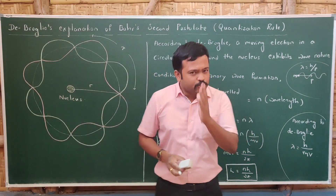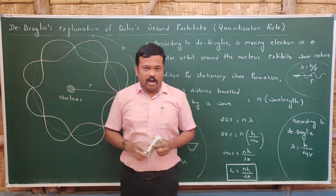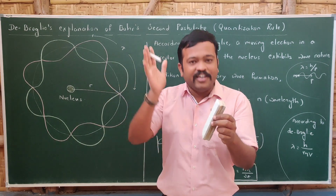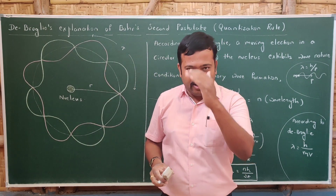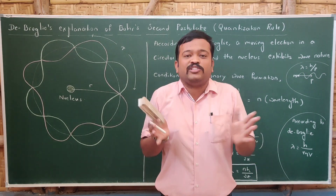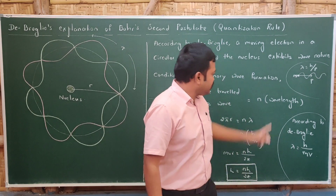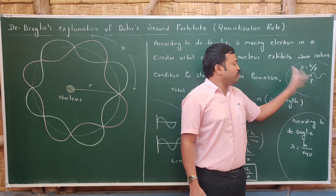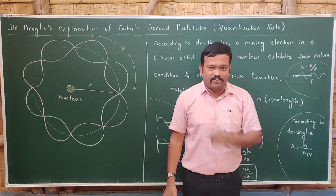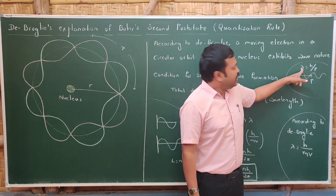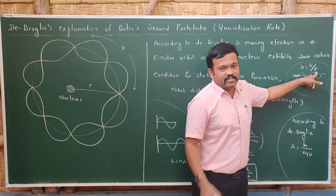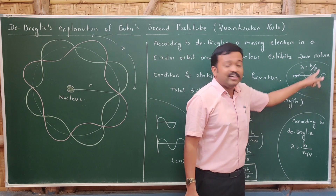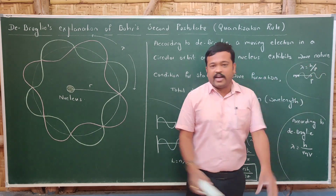Now let us see the explanation for Bohr's second postulate given by de Broglie. According to Bohr's second postulate, electrons revolve around the nucleus only in orbits where angular momentum is an integral multiple of h/2π. De Broglie's hypothesis states that a particle of mass m moving with momentum p is always associated with a matter wave whose wavelength is λ equals h divided by mv.